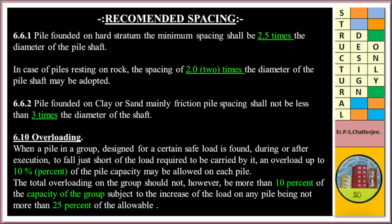Overloading: When a pile in a group designed for a certain safe load is found during or after execution to fall just short of the load required to be carried by each pile, an overload up to 10% of the pile capacity may be allowed on each pile. The total overloading on the group should not, however, be more than 10% of the capacity of the group, subject to the increase of load on any pile being not more than 25% of the allowable.